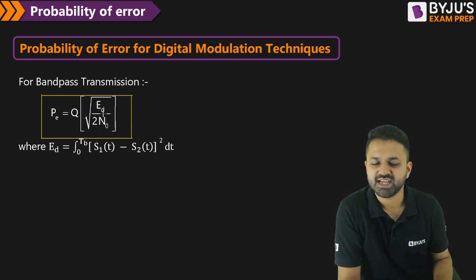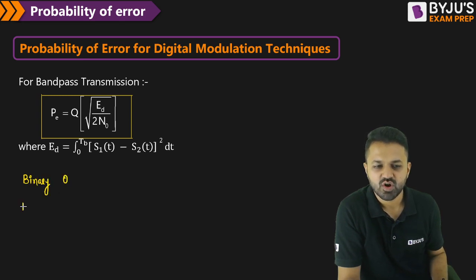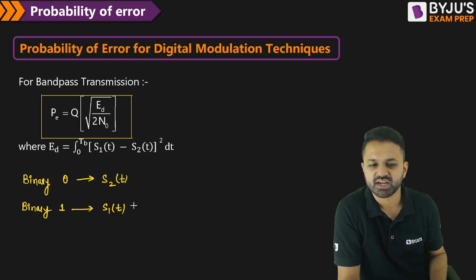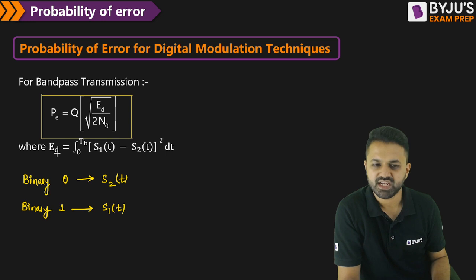What is ED here? ED is nothing but the difference energy — the energy of the difference signal. Since we are talking about binary, we will have binary 0 or binary 1. For binary 0, you will transmit one signal S2(T), and for binary 1, you transmit S1(T). Then you take the difference between these two signals, square it, and integrate it over the time period 0 to TB DT to get ED, and substitute it in the above expression.